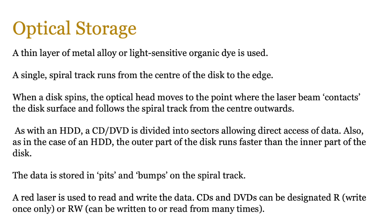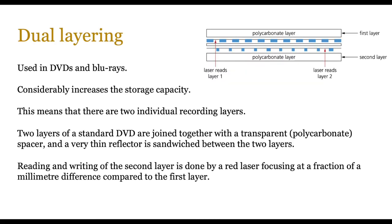We're going to look at dual layering because DVDs and Blu-rays often have limited storage sizes. To increase capacity, two individual recording layers are used. On a DVD, these two layers are joined together with a transparent polycarbonate spacer, and a very thin reflector is sandwiched between them. Reading and writing of the second layer is done by a red laser focusing at a fraction of a millimeter difference compared to the first layer. Data is stored in alternating sections, which helps increase the capacity of the DVD.